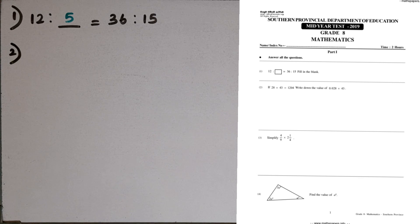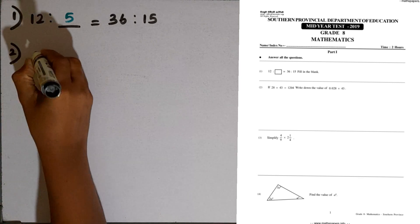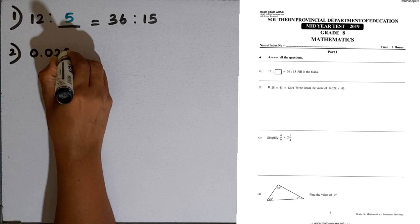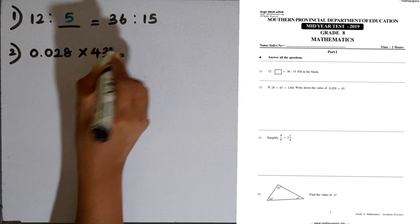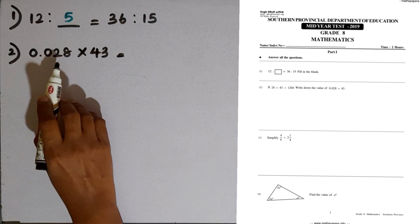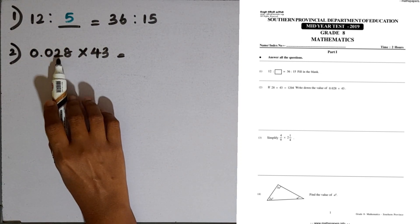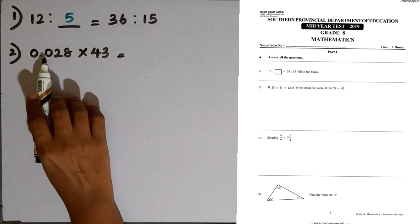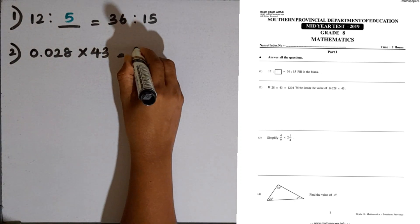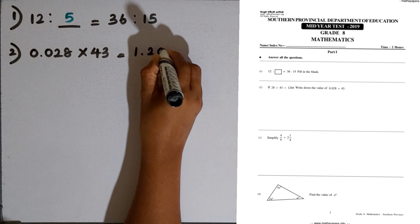Second question: if 28 multiplied by 43 equals 1204, write down the value of 0.028 multiplied by 43. If you neglect the decimal point, you multiply 28 by 43 to get 1204. Then we have to keep 3 decimal places in the answer, so the answer is 1.204.